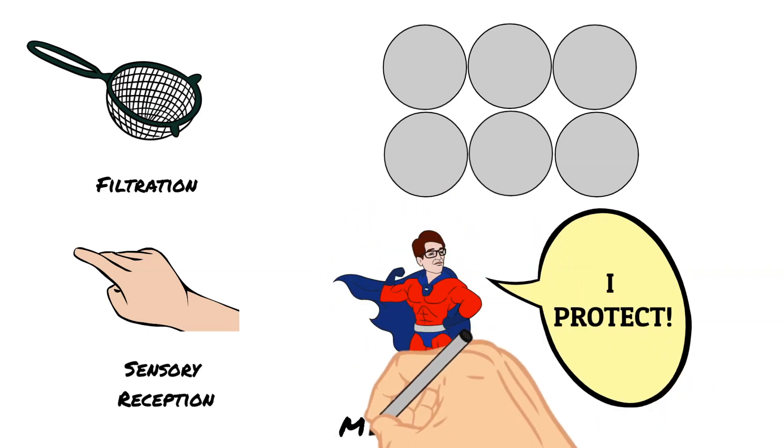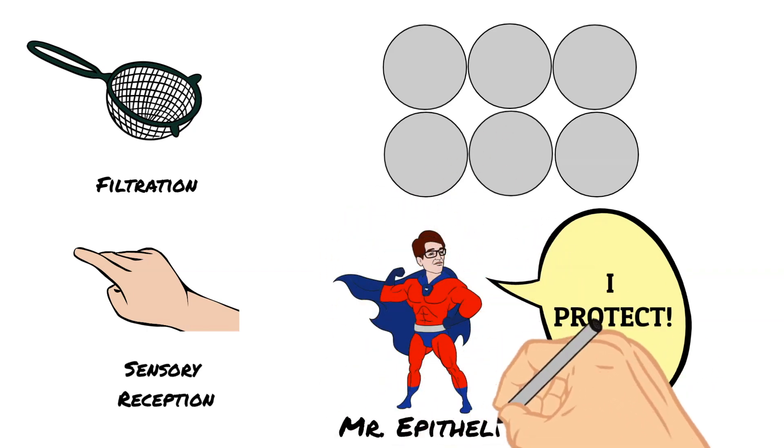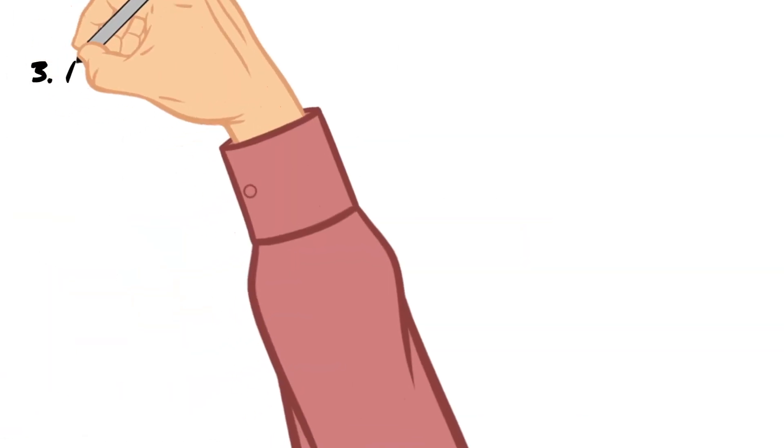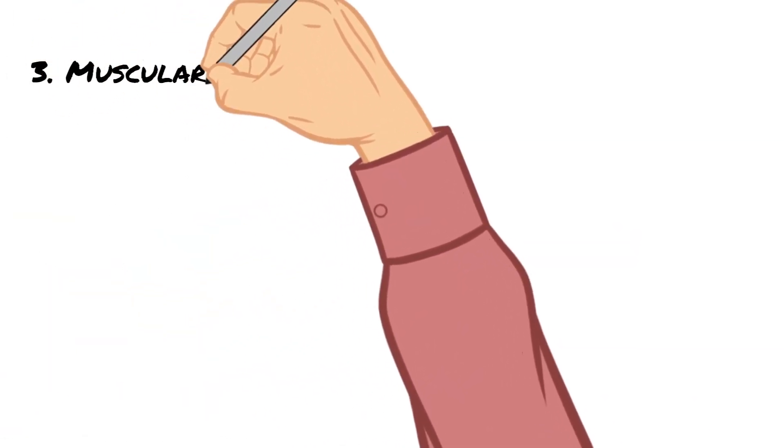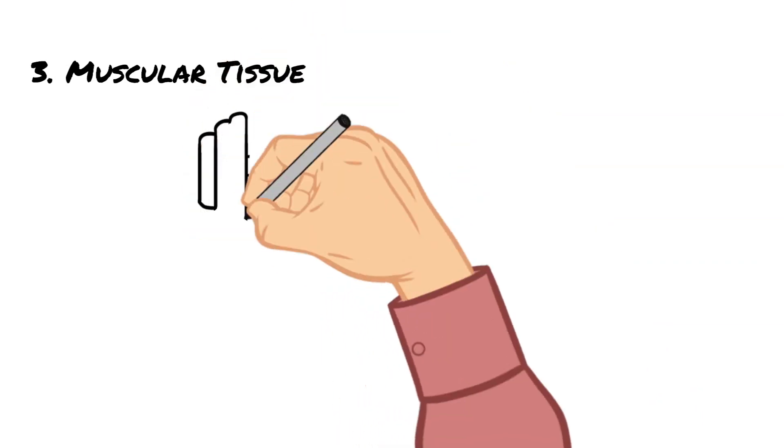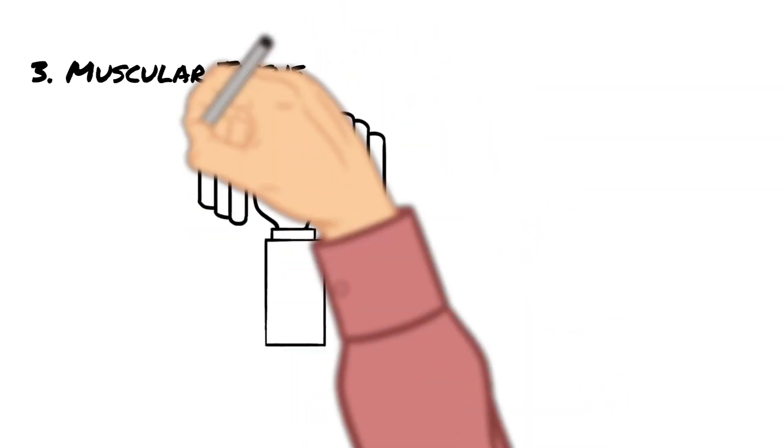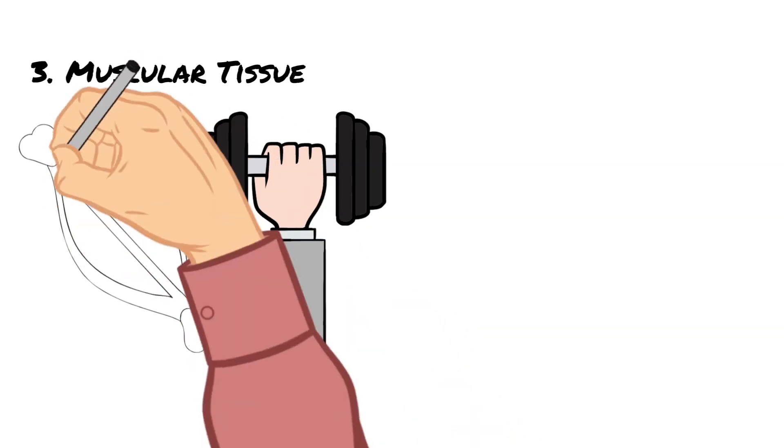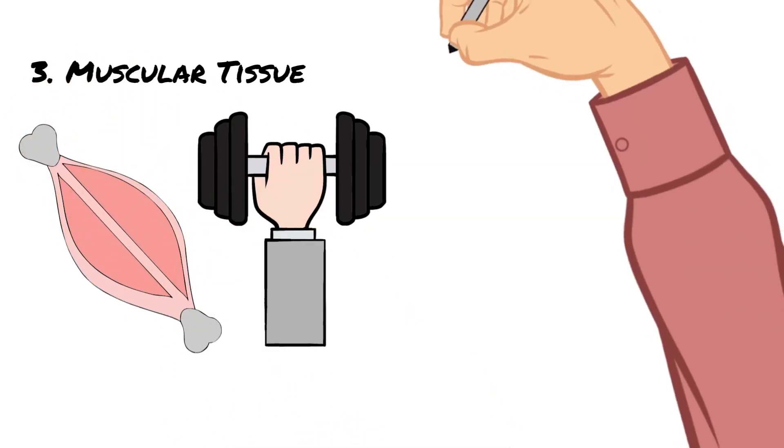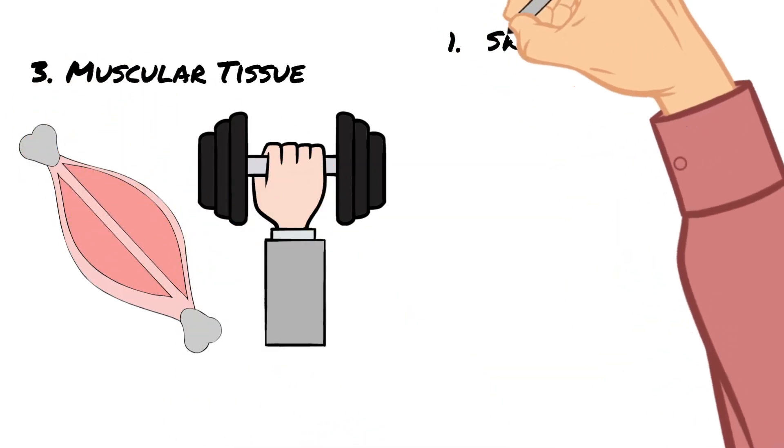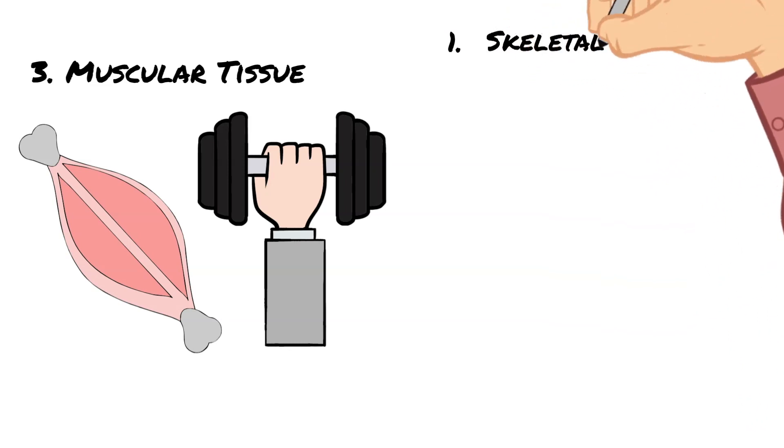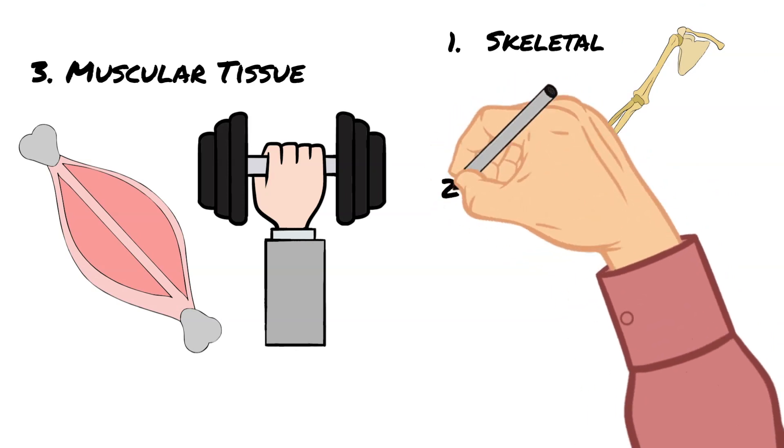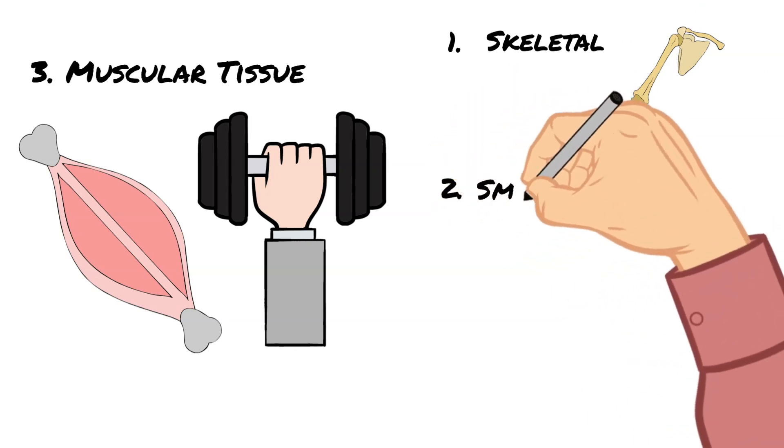The next type of tissue is muscular tissue. Now this one may be familiar to you. Muscular tissue makes up—can anyone guess?—our muscles. Within vertebrates, which are animals with a skeleton, muscular tissues can be broken into three different categories.